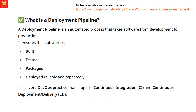Deployment Pipeline. When software code is added to the codebase, the code is built, tested, packaged, and deployed — all these processes are in the deployment pipeline. It is an automated process that takes software from development to production.